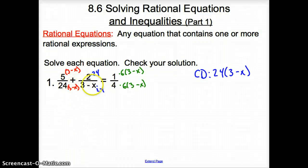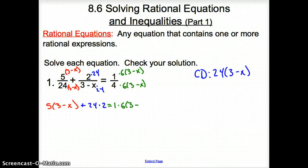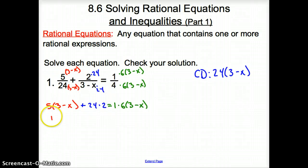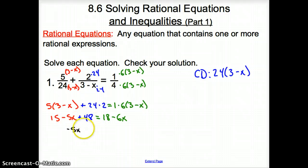When we solve equations, once you get to the same common denominator, we no longer need that common denominator. So I'm going to write 5 times (3 minus x), plus 24 times 2, and that's going to equal 1 times 6 times (3 minus x). Once you get here, it's just like solving an equation. We have 15 minus 5x, then plus 48, and that's going to equal 18 minus 6x. Combine like terms: we have negative 5x and then 15 plus 48 is plus 63.